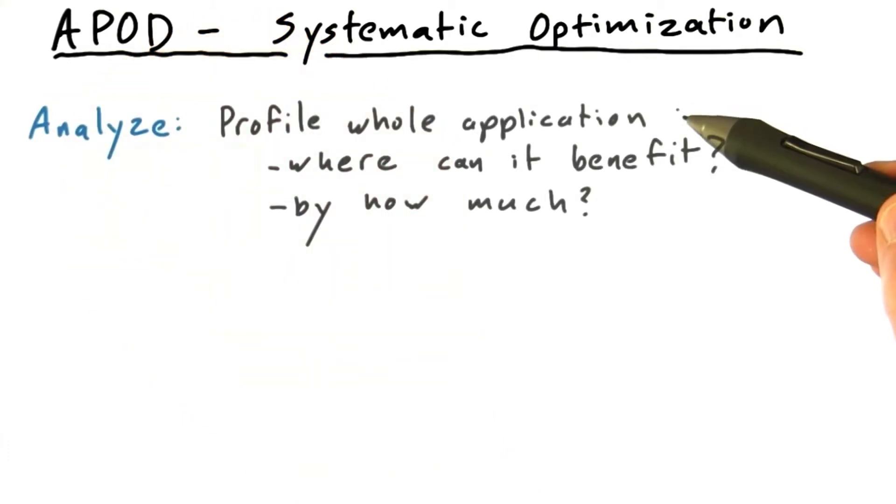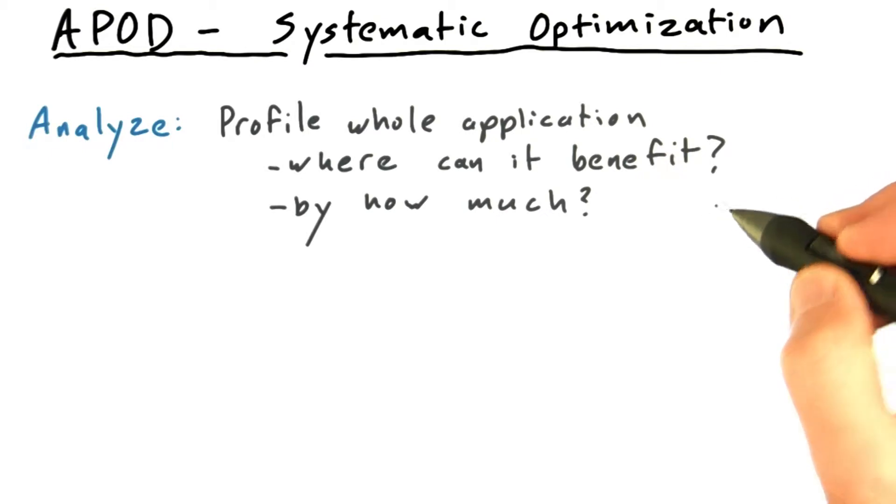The Analyze stage is all about profiling the whole application, looking not just at the kernels you intend to parallelize, but looking at the whole thing and trying to figure out where can this application benefit from parallelization, and how much can you expect to benefit.